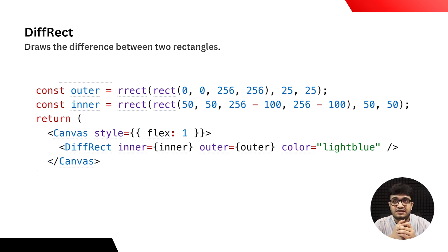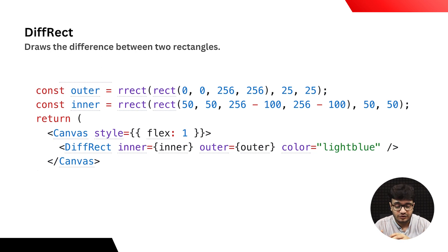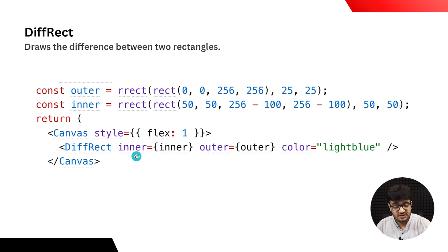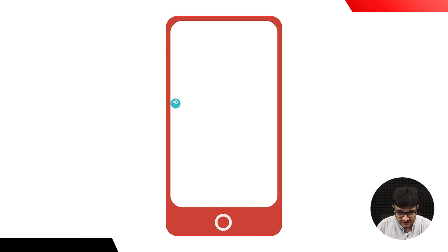React Native Skia also provides something called the diff rect. This draws the difference between two rectangles: you define an outer rectangle and an inner rectangle, then subtract the inner from the outer, and the resulting border is drawn onto your screen. You define the diff rect component, specify what the inner shape is and what the outer shape is, and define the color.